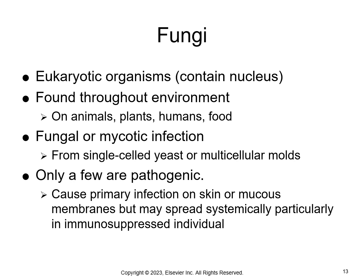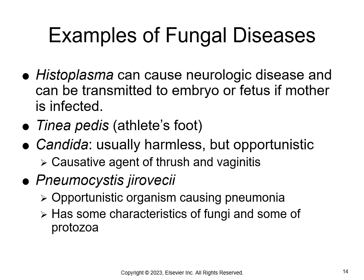Then we have fungi. Fungi have a nucleus, which means they are eukaryotic. They're found everywhere — on animals, plants, humans, and food. Fungal growth is promoted by warmth and moisture; fungus loves warm, dark, moist areas. There are good fungi, like in yogurt and other foods, and bad fungi, like in yeast infections. Only a few types of fungi are pathogenic — remember that pathogenic means infection-causing. They cause infections on the skin or mucous membranes, but they can spread systemically.